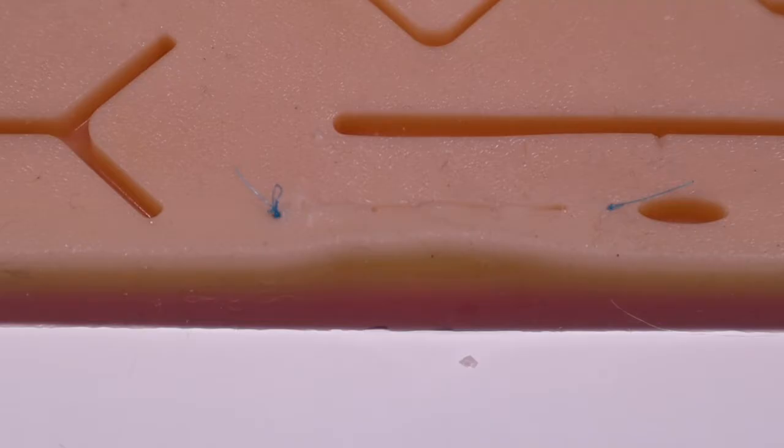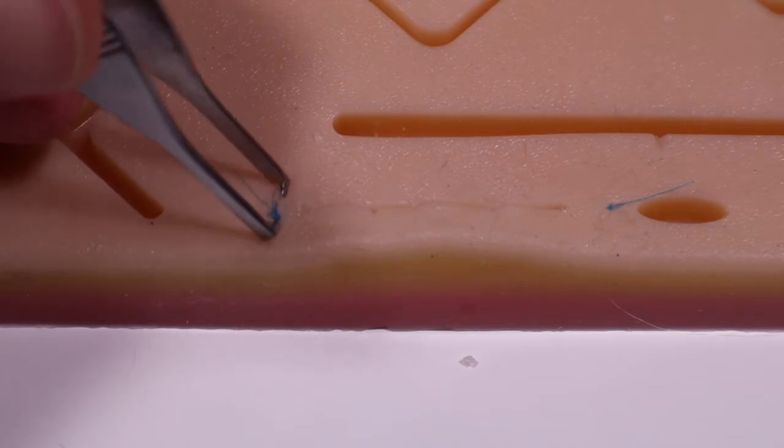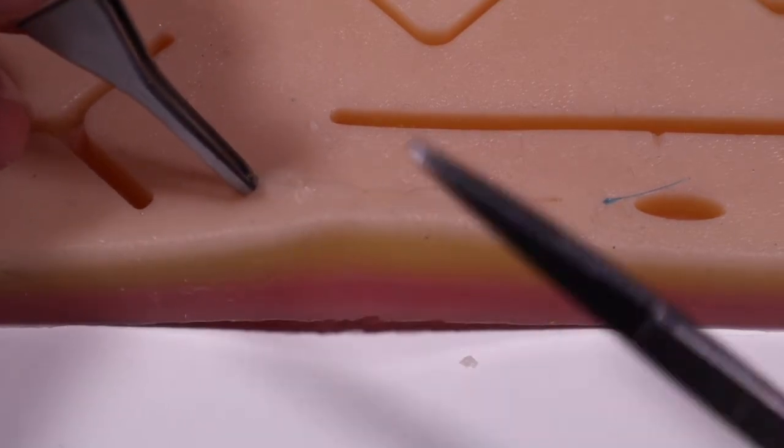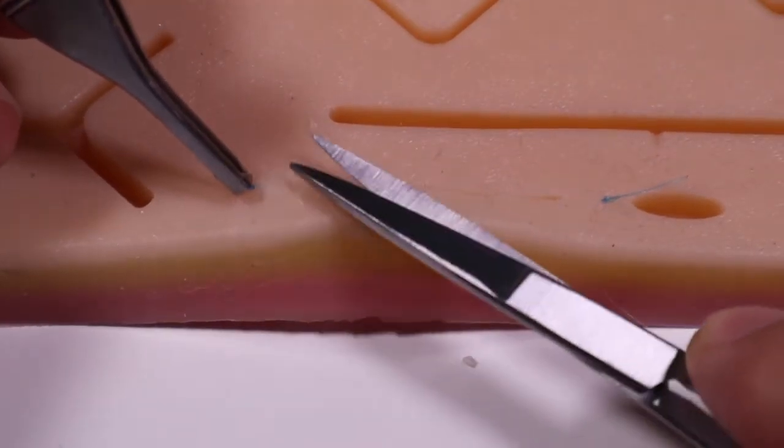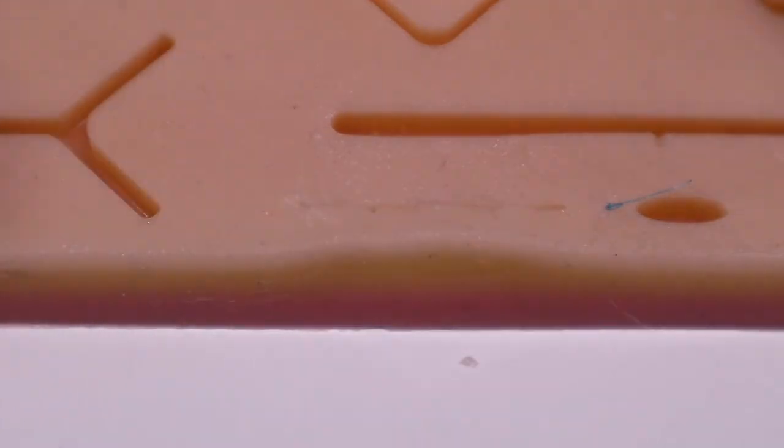Now, once that wound is satisfactorily healed, or either healed enough that you don't need the anchors, you take those out just like you would a simple interrupted stitch. You grab your knot, pull it up, and clip right under the knot at the skin.